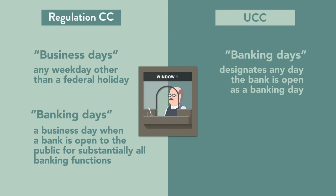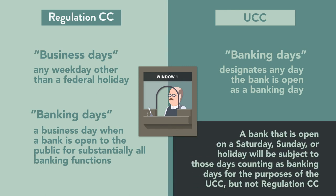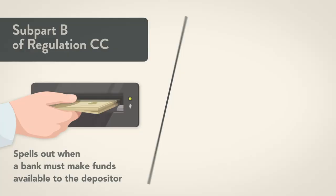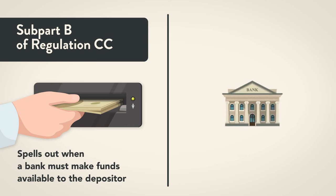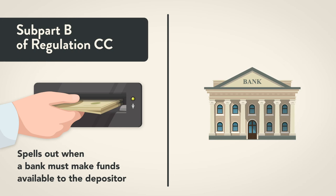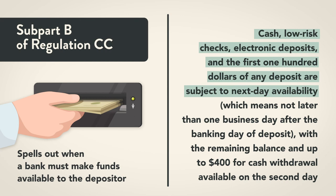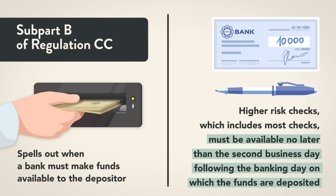The UCC, on the other hand, designates any day the bank is open as a banking day, so a bank that is open on a Saturday, Sunday, or holiday will be subject to those days counting as banking days for UCC purposes but not Regulation CC. Subpart B of Regulation CC spells out when a bank must make funds available to the depositor. Cash, low-risk checks, electronic deposits, and the first $100 of any deposit are subject to next-day availability — meaning not later than one business day after the banking day of deposit — with the remaining balance and up to $400 for cash withdrawal available on the second day.